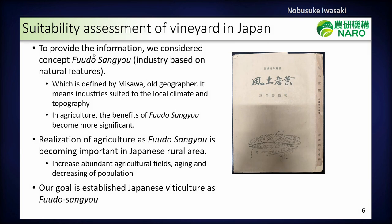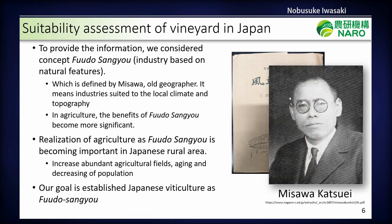To provide such information, we considered the concept of food san-gyo, which means industry based on natural features. This is a book written by Katsuei Misawa, a geographer and junior high school geography teacher. He said that in agriculture, the benefit of food san-gyo becomes more significant — food san-gyo is similar to the concept of terroir. The realization of food san-gyo agriculture is becoming important in Japanese rural areas, where there is an increasing number of abandoned agricultural fields along with population aging and decline.